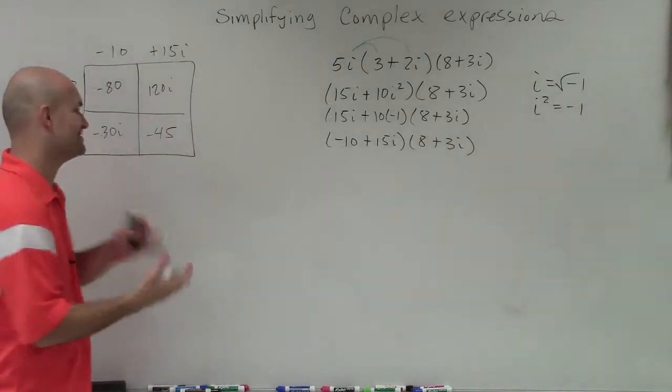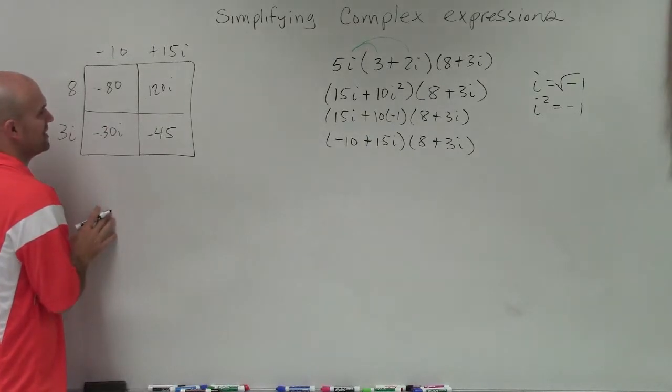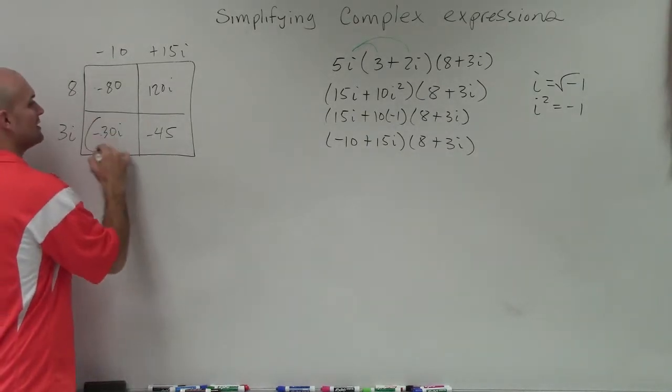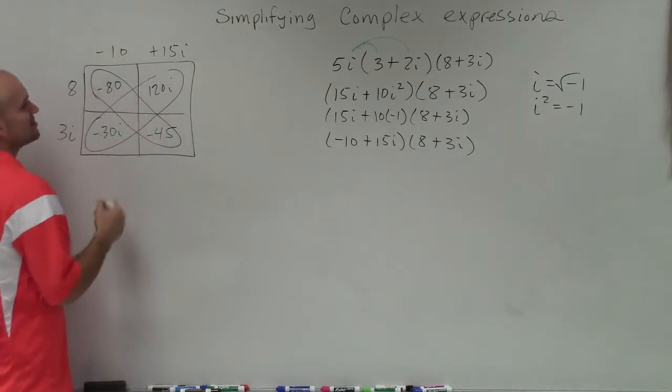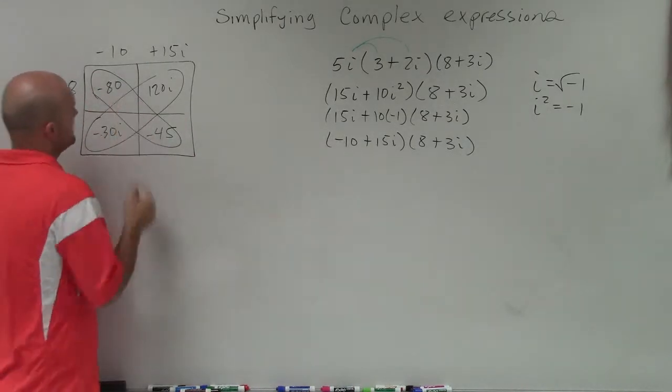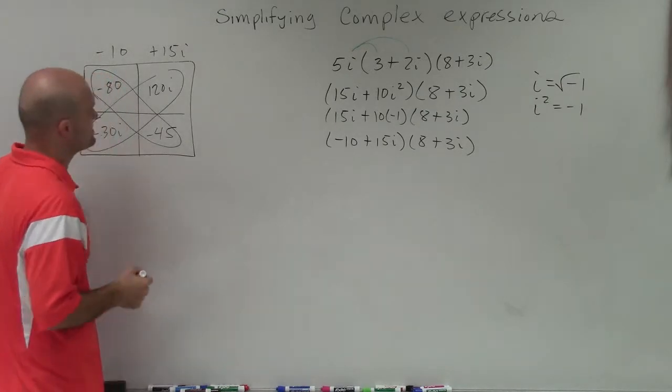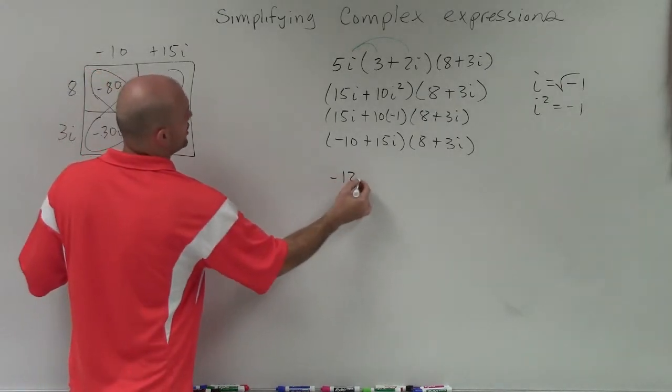You can rewind if you need to see how I got negative 45. Now, the important thing is these are both imaginary and these are both real numbers, so they're like terms and I can combine them. Negative 80 minus 45 is negative 125, and negative 30i plus 120i is positive 90i.